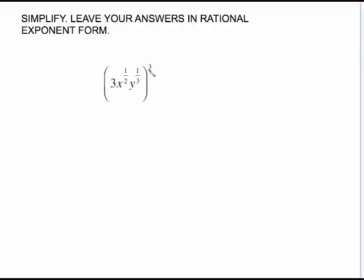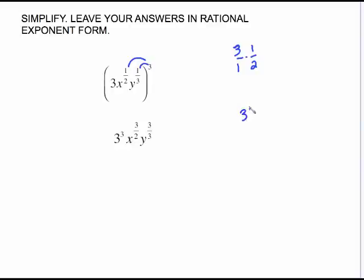We can also use this rule when there's more inside the parentheses. We raise everything to the third power: the coefficient 3 cubed equals 27. Then multiply the exponents: 3 times 1/2 is 3/2, and 3 times 1/3 is 3/3. Cleaning up: we have 27 times x to the 3/2, and 3/3 simplifies to 1, so y to the 1 is just plain y.